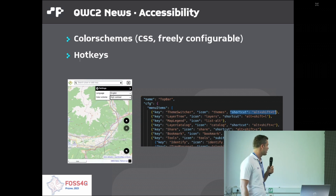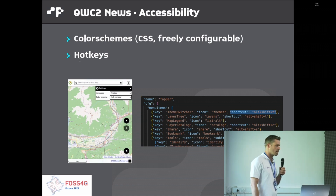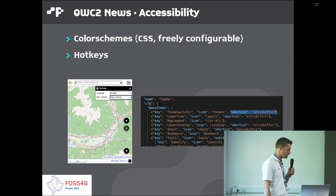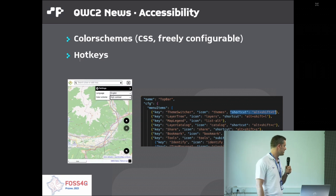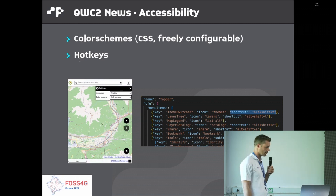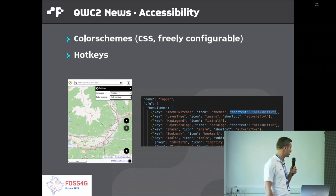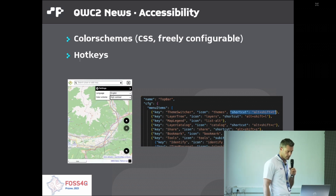We've done some work on accessibility. First, you can create custom color schemes solely through CSS variables — here we see a high contrast color scheme, but it can be anything you desire. It's a set of about 15 CSS variables that controls the entire color scheme of the application. We've also implemented support for hotkeys, which you can configure in the configuration file for launching tools in the viewer.